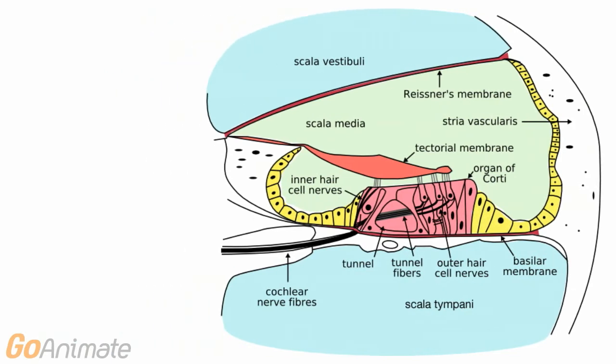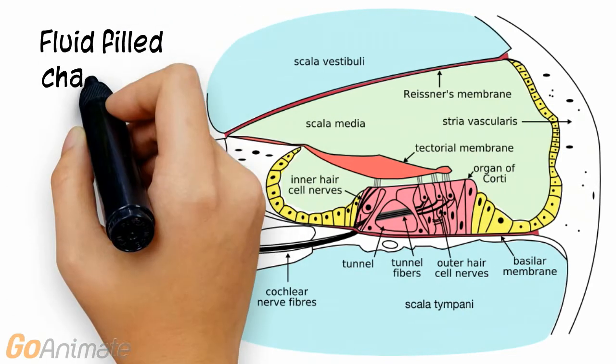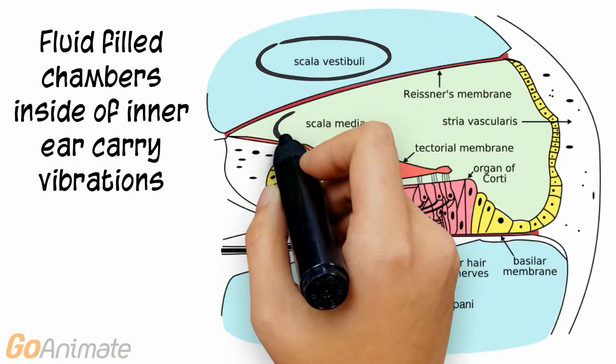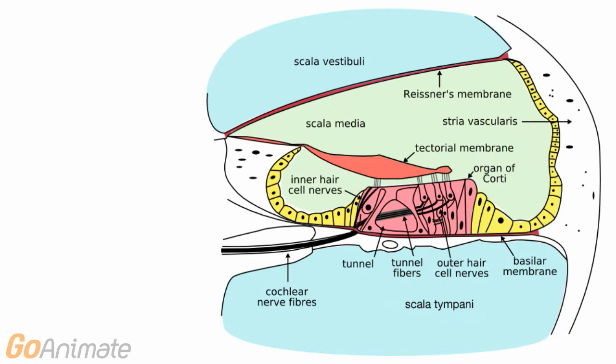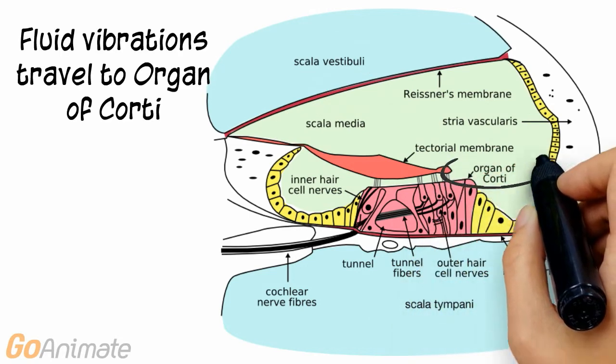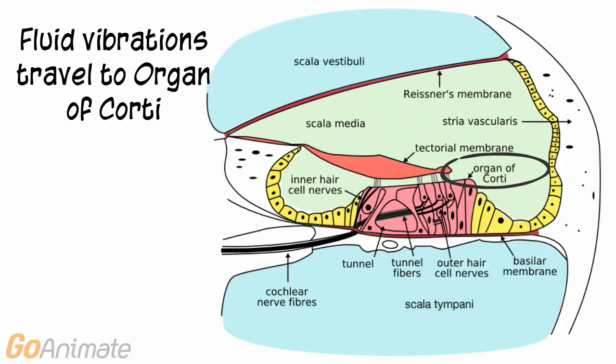Sound is further processed in the cochlea. There are three fluid-filled chambers inside of the cochlea: the scala vestibuli, scala media, and scala tympani. The vibrations at the oval window are transmitted through fluid.